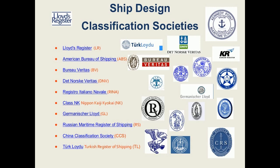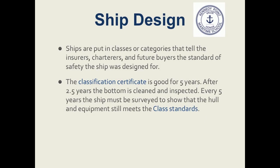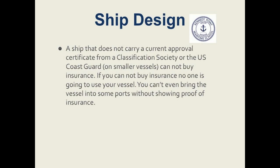Ships are put in classes or categories that tell insurers, charters, and future buyers the intended use these ships were designed for. The classification certificate is good for 5 years. After 2.5 years the bottom is cleaned and inspected. Every 5 years the ship must be surveyed to show that the hull and equipment still meet the standards for that class of vessel. A ship that does not carry a current approval certificate from a classification society or from the US Coast Guard on smaller vessels is not allowed to operate and cannot buy insurance. Without insurance, no one will use your vessel, and you cannot bring the vessel into some ports without proof of insurance.